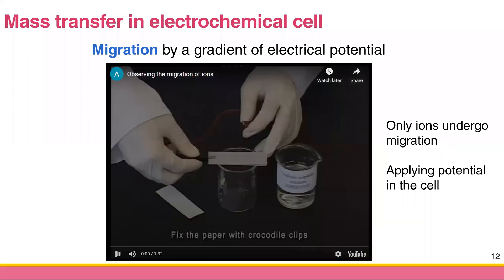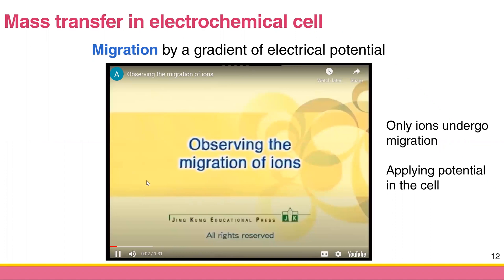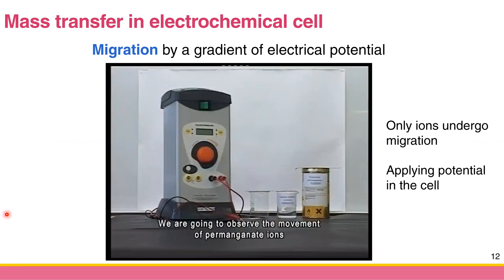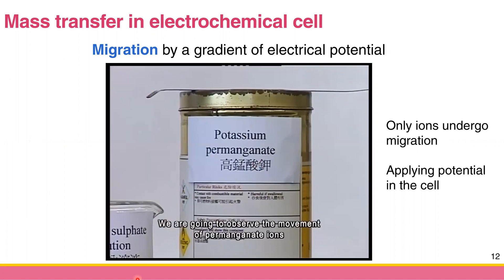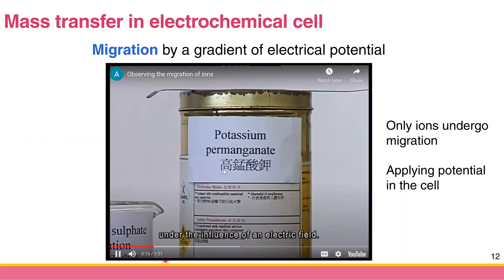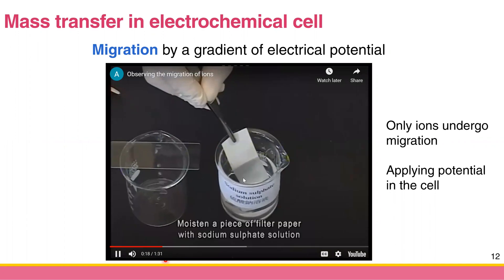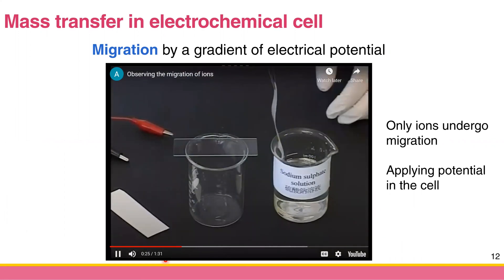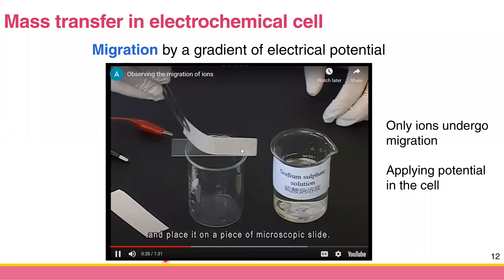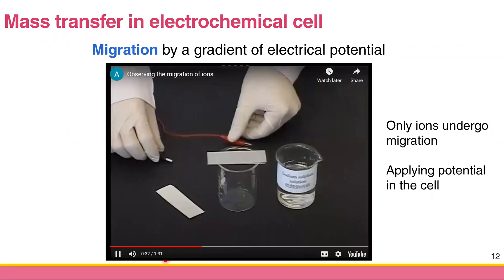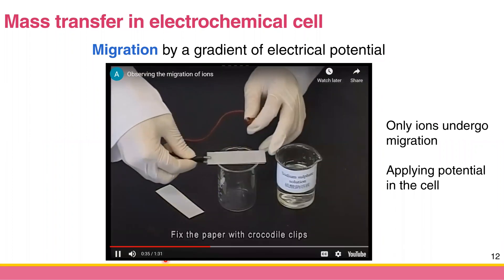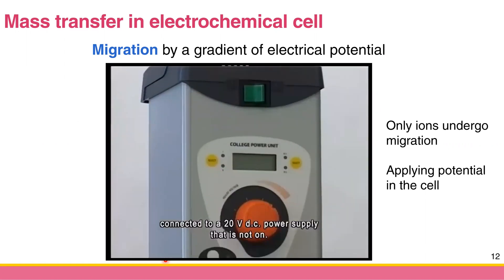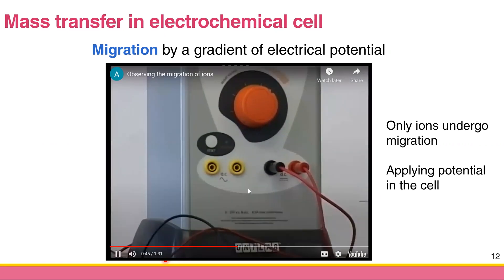Let's see the demonstration. They have potassium permanganate and sodium sulfate as the electrolyte on filter paper placed on a glass slide. They clip it with external voltage — applying 20 volts of electrical voltage to the filter paper.